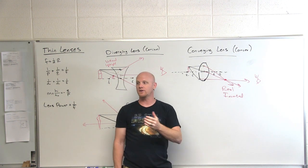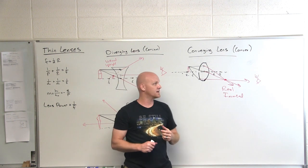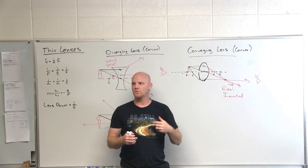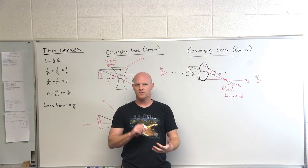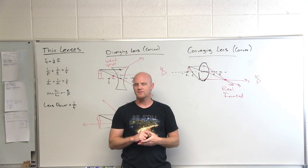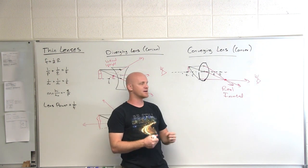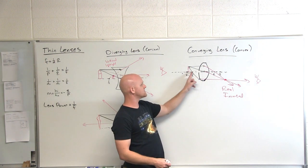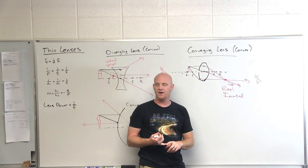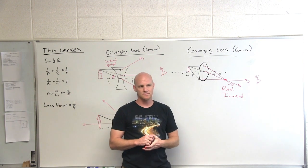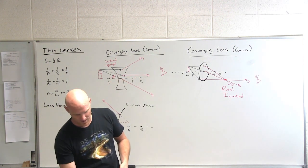That way the image comes out to not be real and inverted, but virtual and upright. Just like when you're within the focal distance on a converging mirror — we said those are used for vanity mirrors, putting on makeup, so your face looks huge. Same thing with the magnifying glass: as long as the object is within that focal distance, the image is going to be bigger than the object and it's going to be upright and virtual. Let's see how the math on this works out.